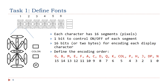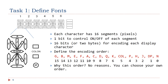Let's assume that we encode the segments in this order: G, B, M, E, F, A, C, D, Q, K, and so on. You may ask why we encode the binary on or off information of these segments in this specific order. In fact, you can use any order you want, as long as you use the same order when you decode the font.